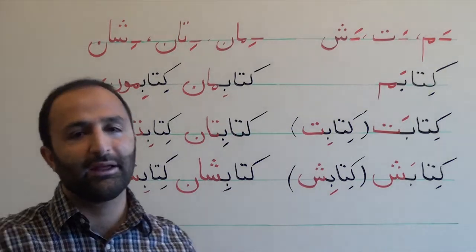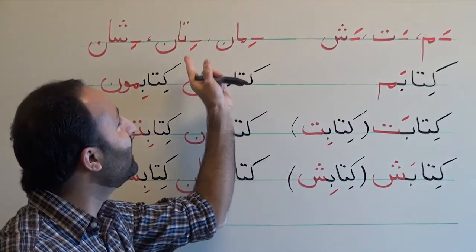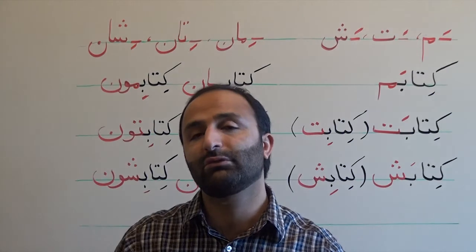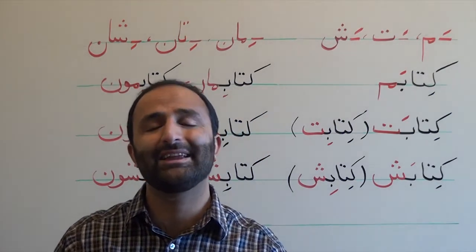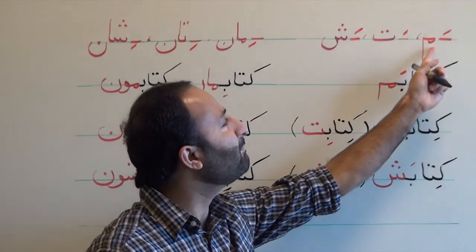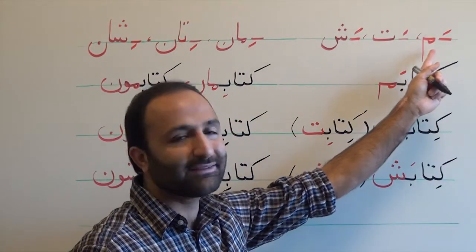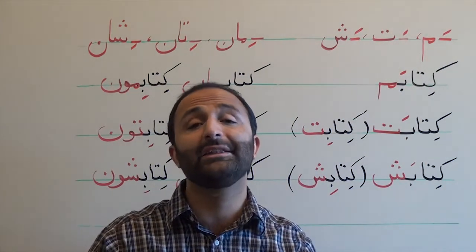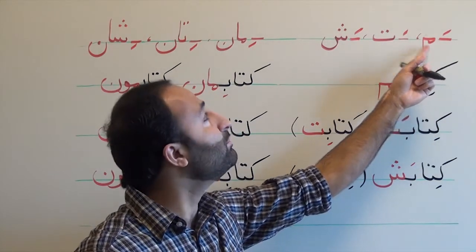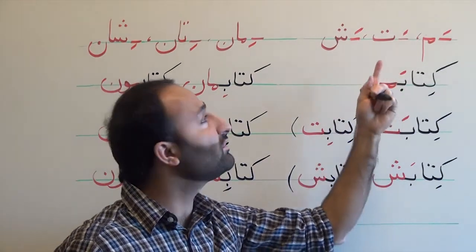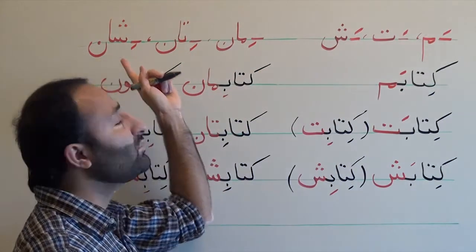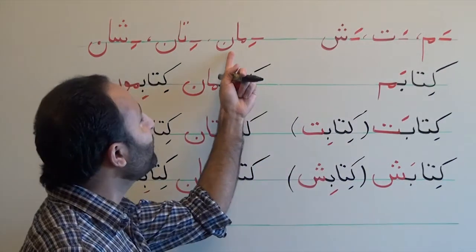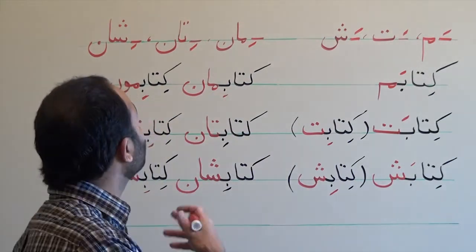Another point to help memorize these endings: in Persian, one way to form a plural noun is to add the suffix '-an.' The singular endings are 'mim,' 'te,' 'sheh.' If you add that suffix '-an' to each, you get the plural forms. So 'me' plus '-an' becomes '-man' for 'our'; 'teh' plus '-an' becomes '-tan'; and 'sheh' plus '-an' becomes '-shan.' In spoken Persian, all of them change '-an' to '-un': man→moon, tan→tun, shan→shun.